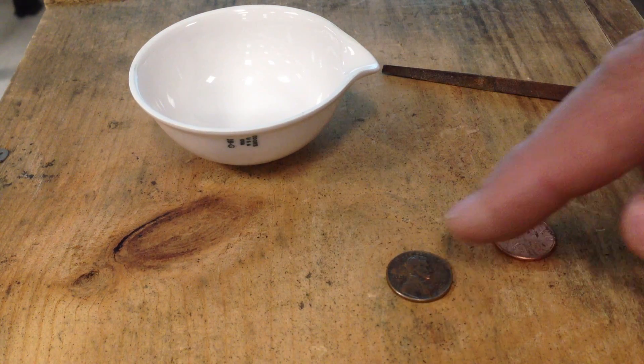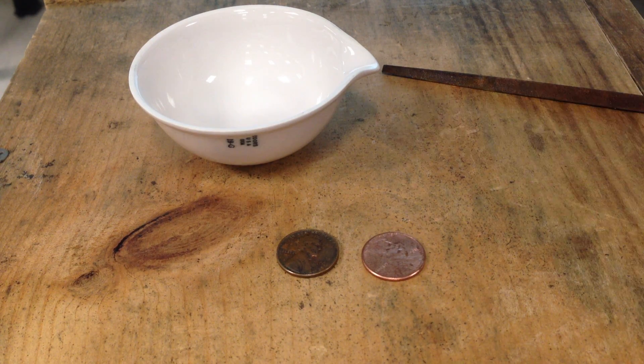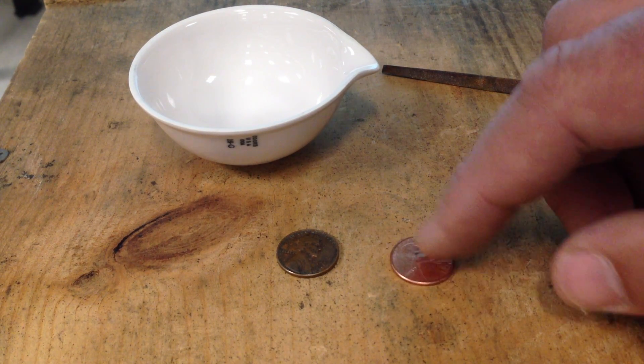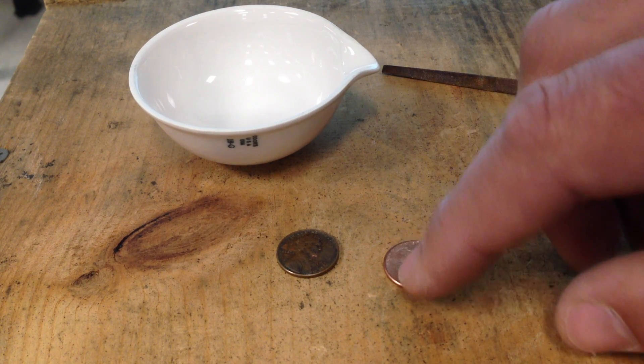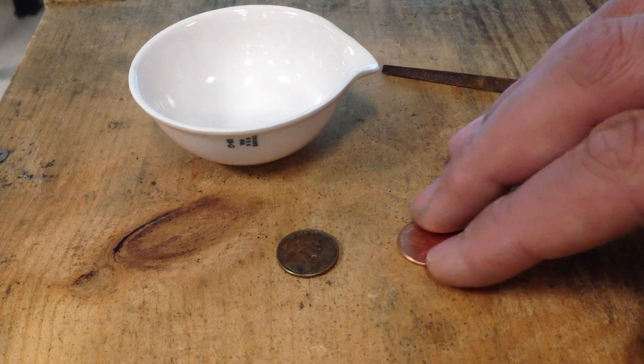The newer penny, this is a 2004 penny, is approximately 95% zinc and about 5% copper. Or if anything, it's copper plated on top of zinc. Very thin plate of copper on top of here.